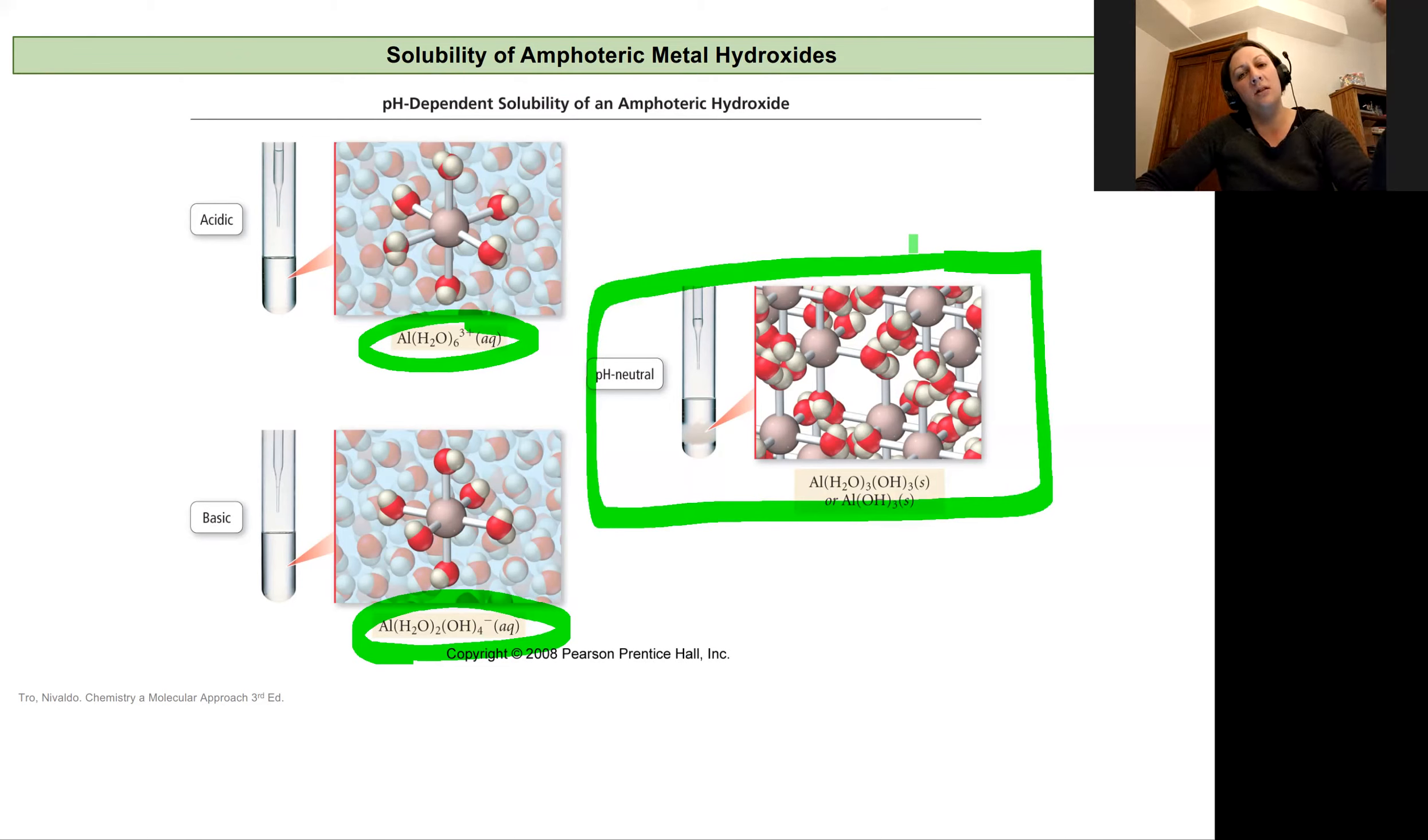As you increase the pH, you will see this aluminum solid form and then disappear. And so if we take advantage and are careful of our pH and our acid-base chemistry, we can actually use this to separate out aluminum species or identify them.